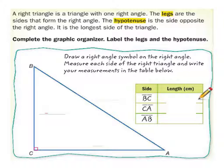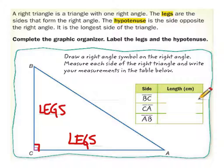With all right triangles, you need to notice that there's a right angle. The two sides that make up the right angle are what we call legs.